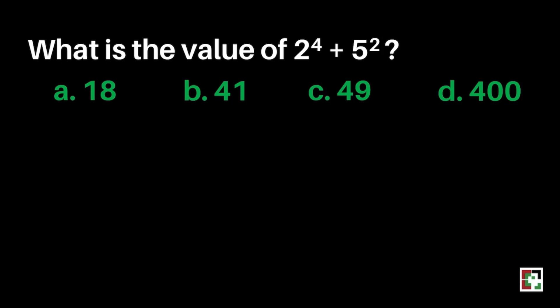We have a question here. What is the value of 2 to the 4th power plus 5 squared? A. 18, B. 41, C. 49, D. 400.